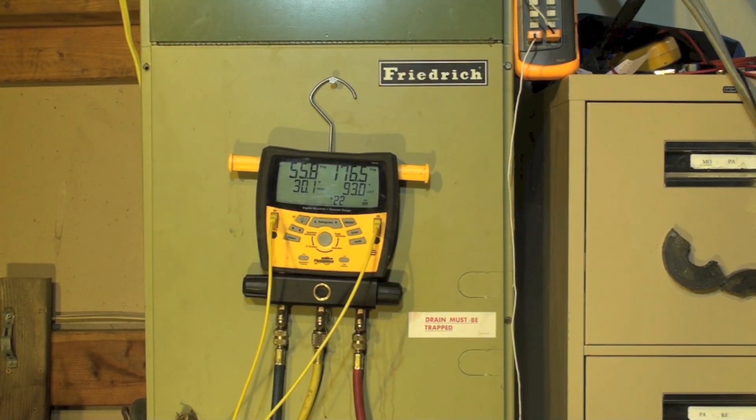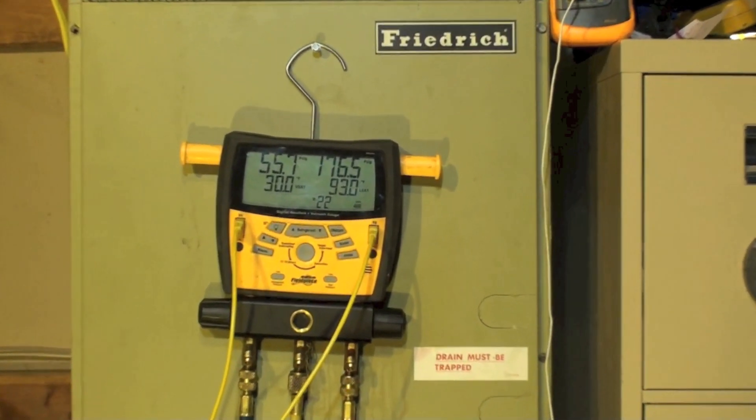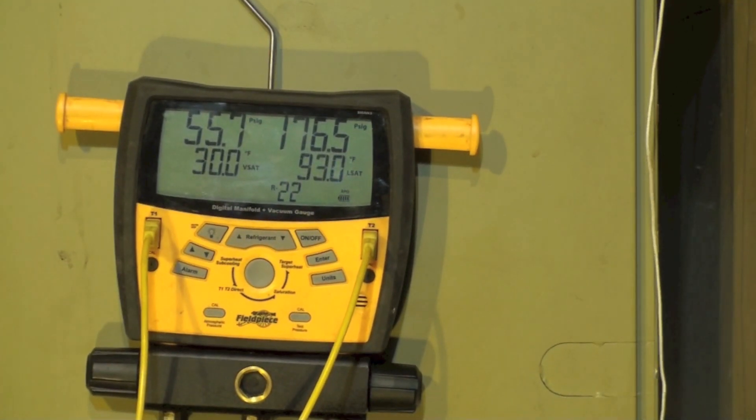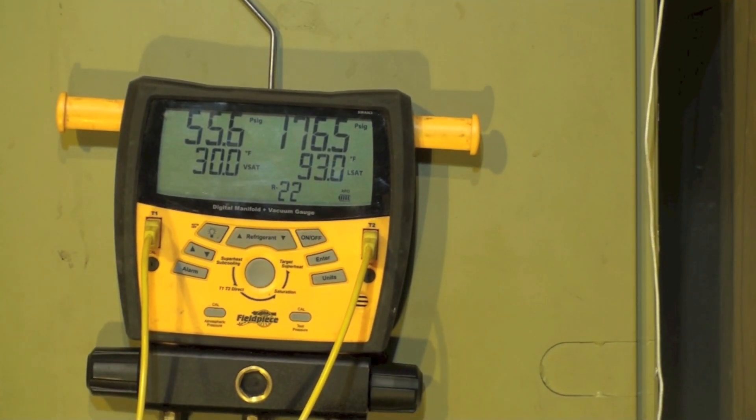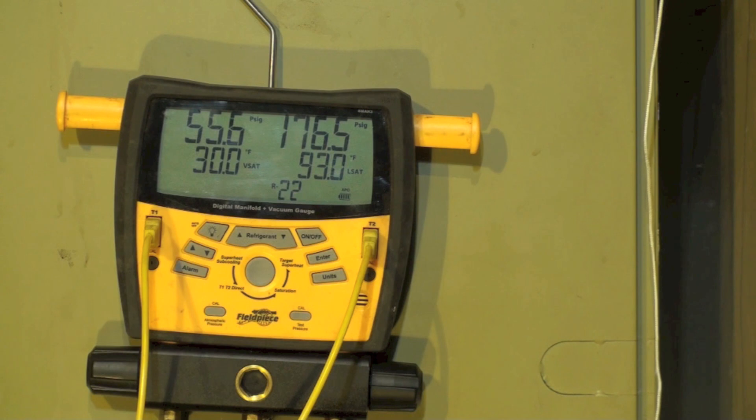I've set this up so you can see the saturated. On this I am evaporating at 30 degrees and I'm condensing at about 93. Our outdoor ambient is about 75, 76 degrees.